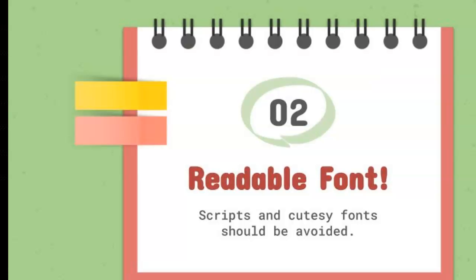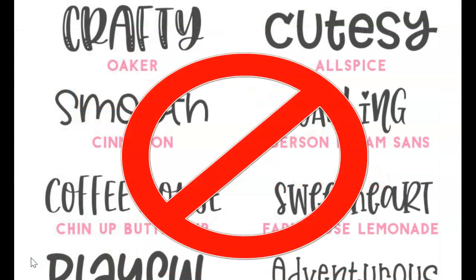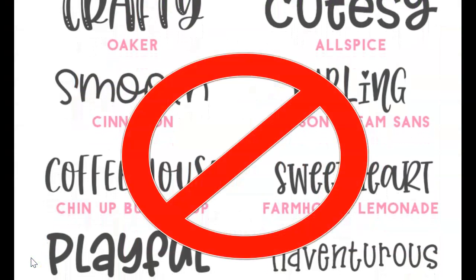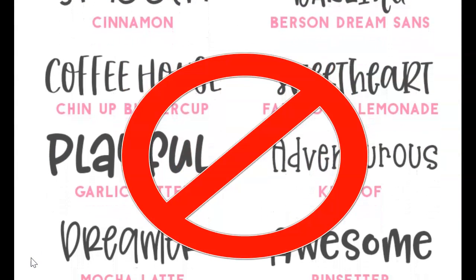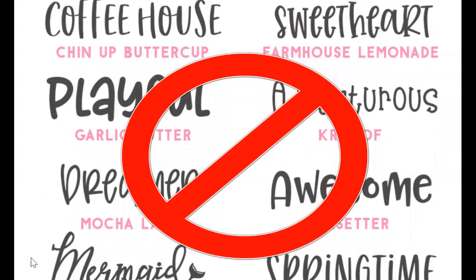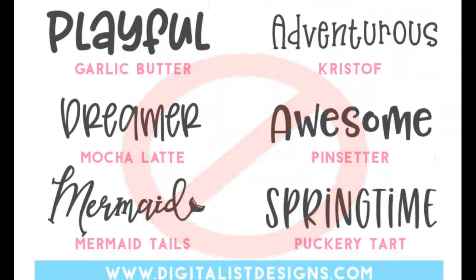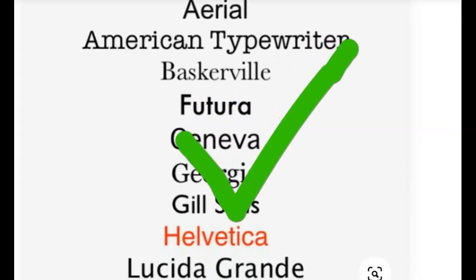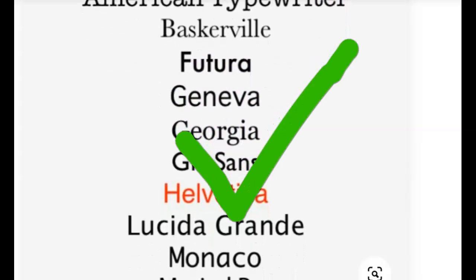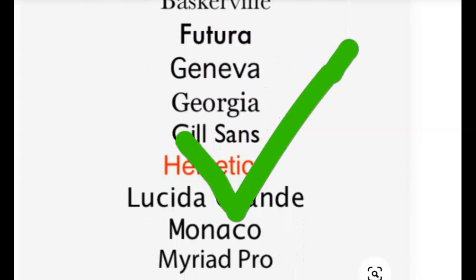My next tip is to use fonts in your activities that are clear and easy to read. It may be tempting to use those cutesy swirly and twirly fonts, but for our emerging readers and our students with processing issues, it can be a real struggle to understand what those fonts are actually saying.